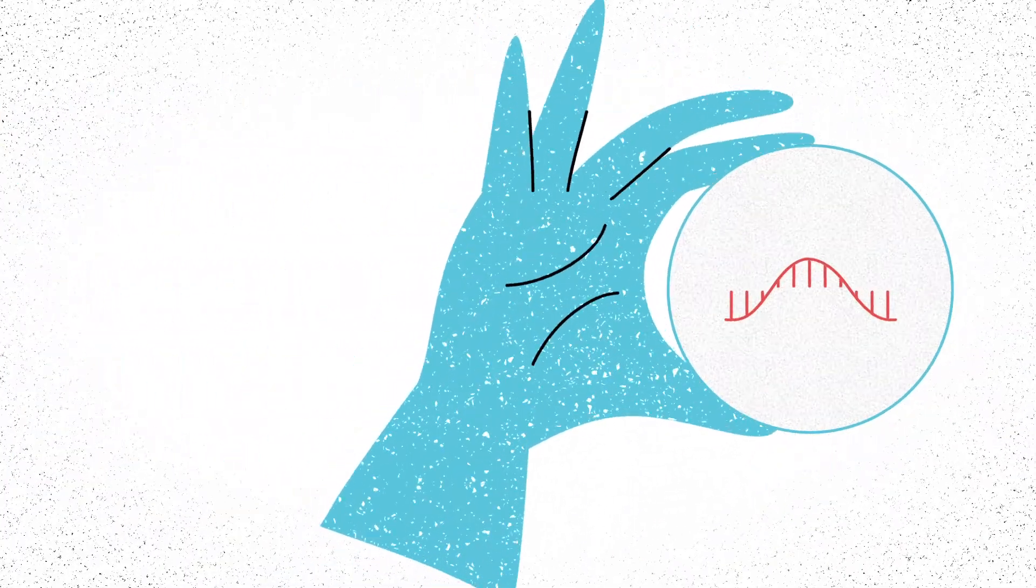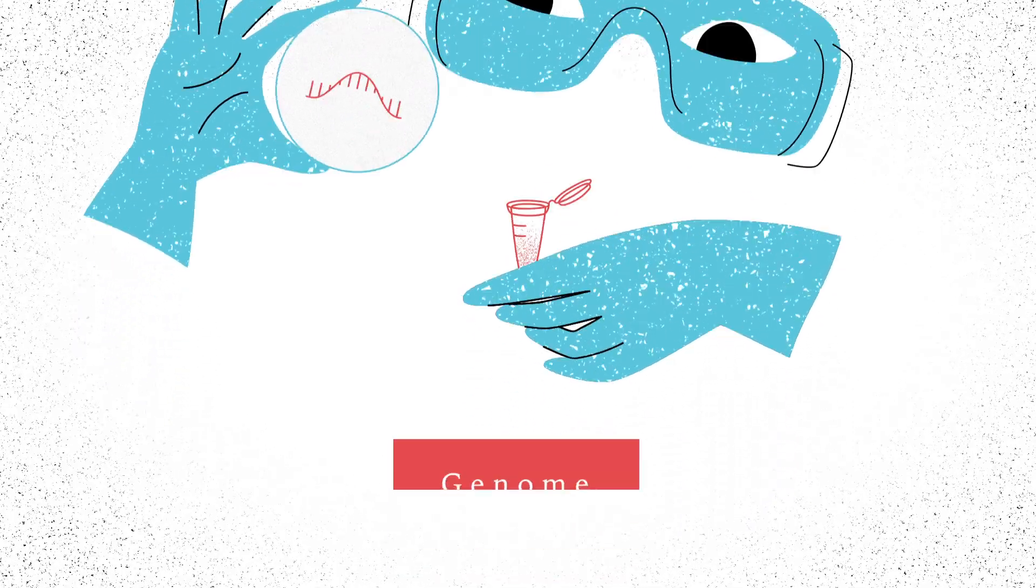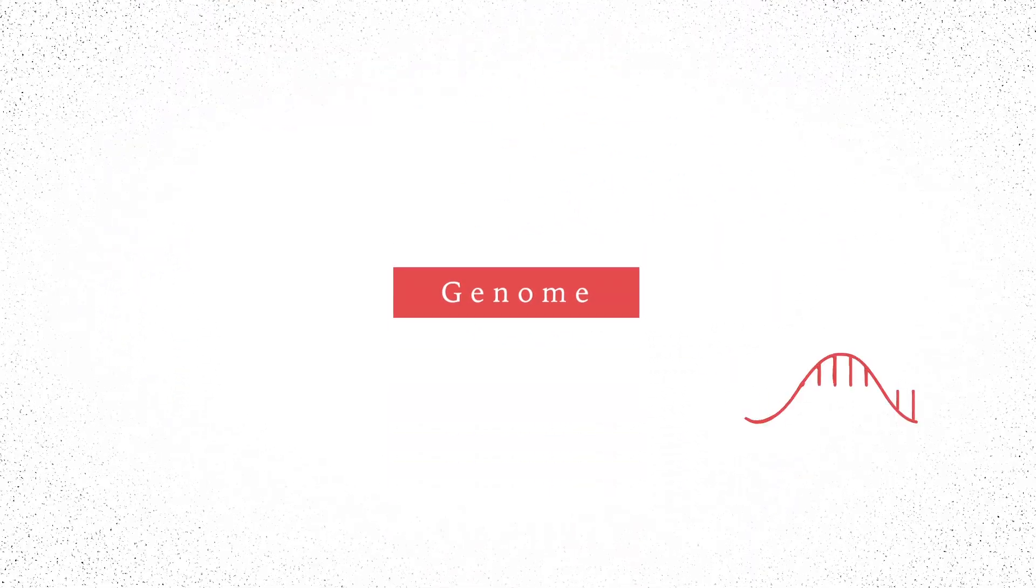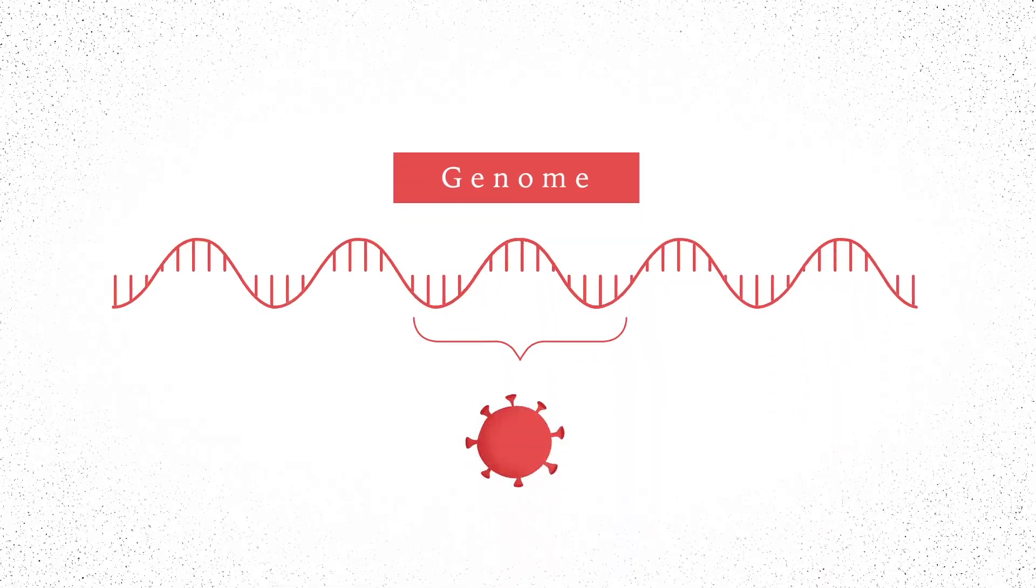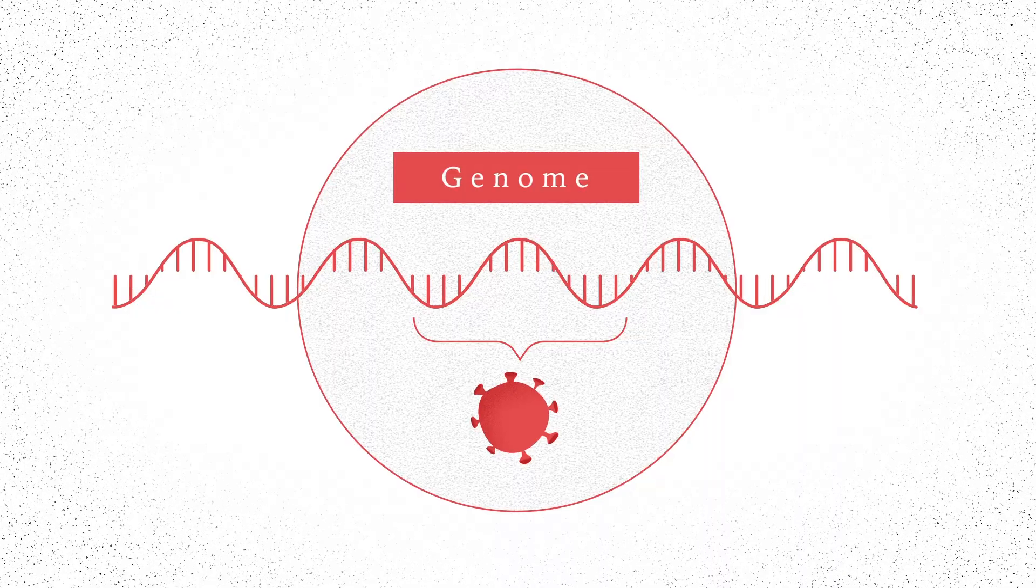To develop a PCR test for a never-before-seen virus, researchers first sequence its genetic material, or genome, and identify regions that are unique to that specific virus. PCR then targets these particular segments.